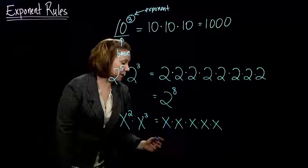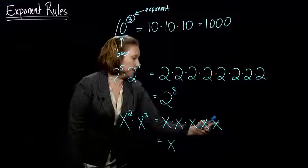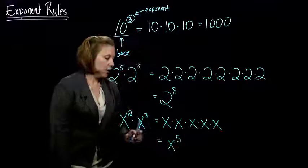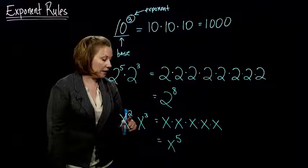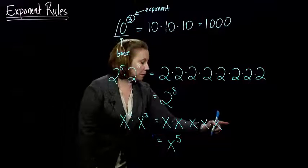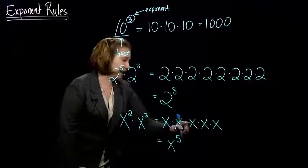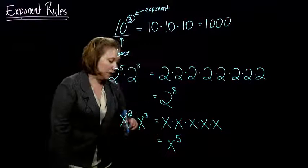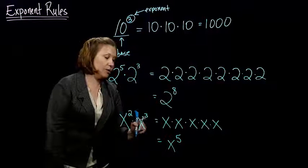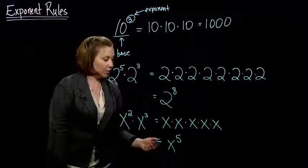And then the 3rd power tells me to take that same number and multiply it by itself 3 times. So, if I count how many times I have that number, I have that 5 times. So, again, you can see that I'm counting up the number of x's that I have here, the same way I counted up the number of 2's, which is the same thing as taking 2 and adding it to 3.